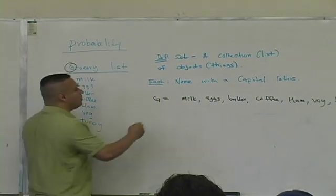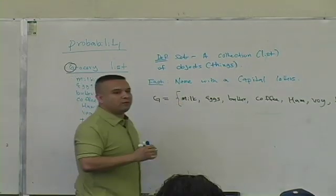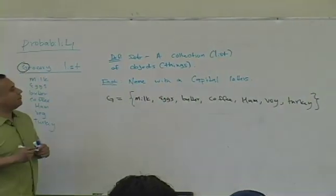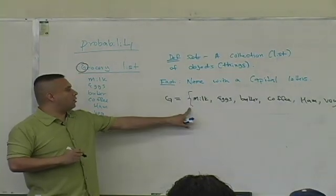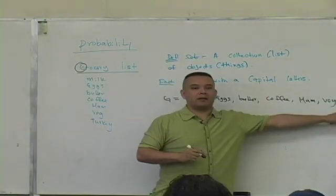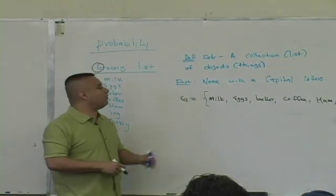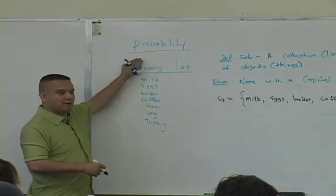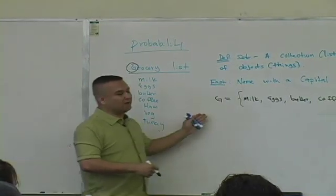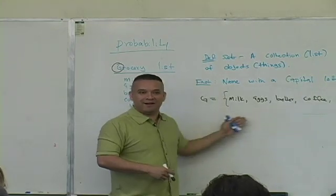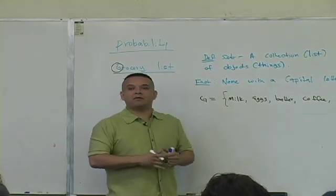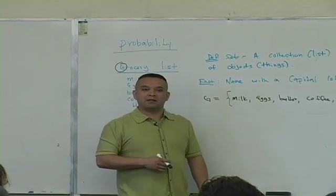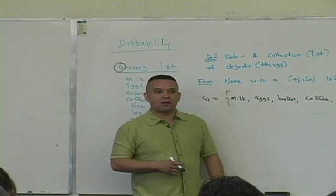And we also use these curly brackets. This opens the bracket, this closes the bracket. So in math, this is how we write all of our lists. So when I go to the grocery store and I make a list, I don't do it this way, I do it how? This way. This is math notation. We've got to be good with this notation to help us with probability. You guys okay with this? Anybody have any questions on that?